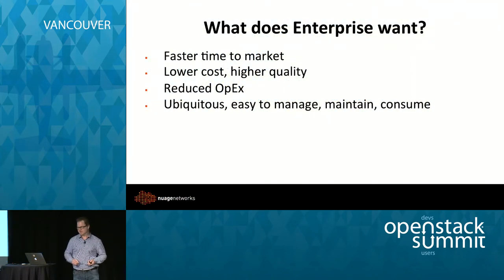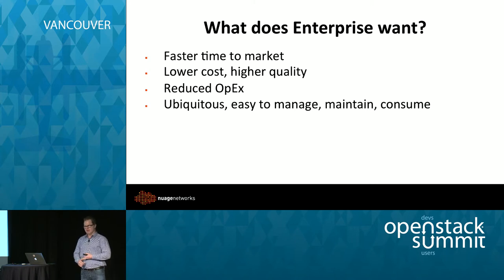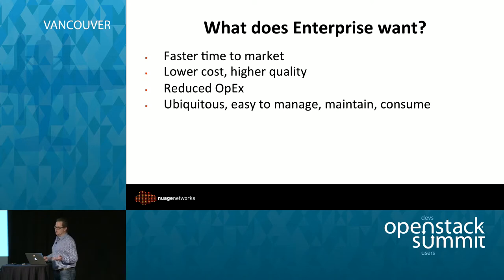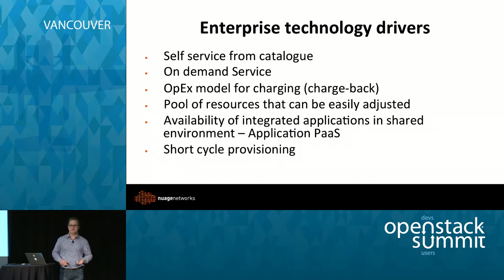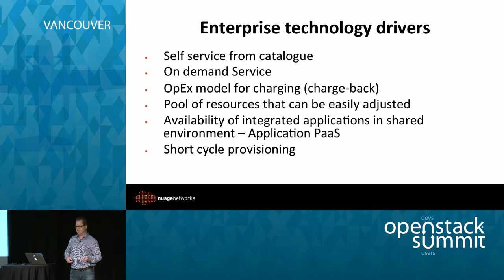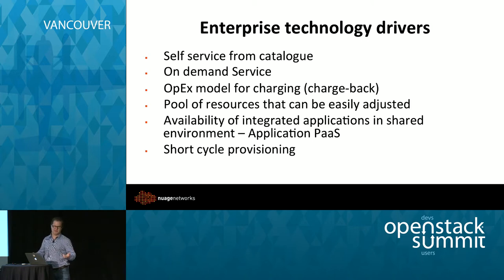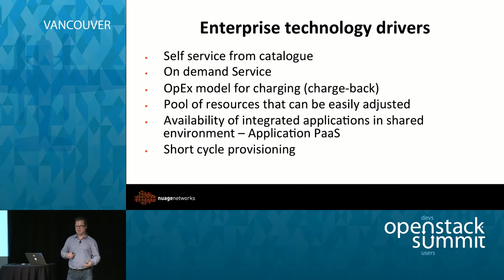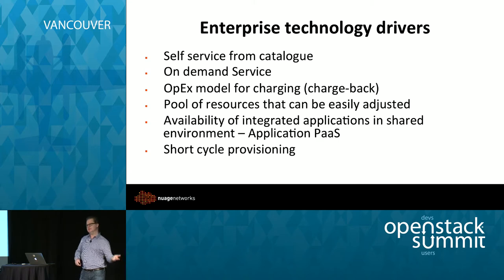As an introduction, I'd like to first set the parameters around what we believe enterprise wants, gathered from a lot of our customers. Essentially driving the business is faster time to market, lower cost and higher quality, reduced operational expenditure, and ubiquitous, easy to manage, maintain and consume technology. The technology driving this business change is the trend of IT as a service: self-service from a catalogue, on demand, an operational expenditure model for chargeback, pools of resources that can easily be adjusted — we see that with platform as a service environments, availability of integrated applications in shared environments, and short cycle provisioning.